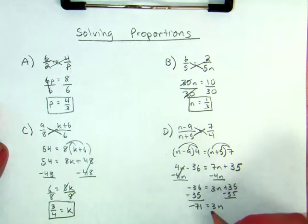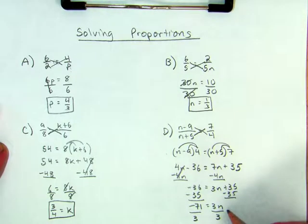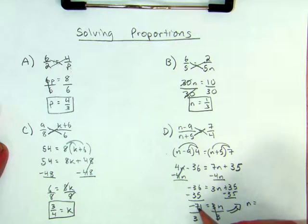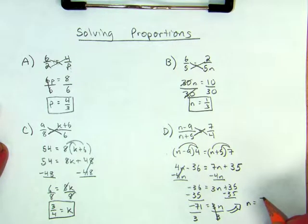So when I divide by 3, I'm left with N equals - can I reduce this at all? Nope. So I just leave it as negative 71 over 3. And that is the solution.